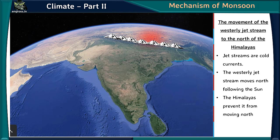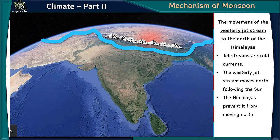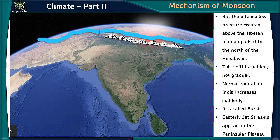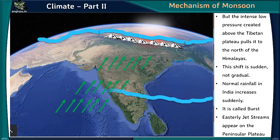The movement of the westerly jet stream to the north of the Himalayas is another key factor. Jet streams are cold currents, and the tall, wide, extremely cold Himalayas normally prevent this movement. But the intense low-pressure above the Tibetan Plateau pulls the westerly jet stream to the north of the Himalayas — suddenly, not gradually. This causes the sudden burst of monsoon rainfall in India, and easterly jet streams appear on the Peninsular Plateau.